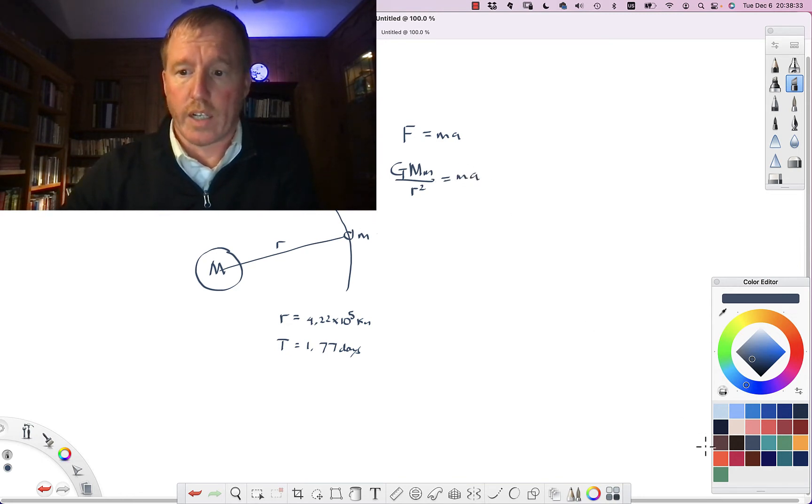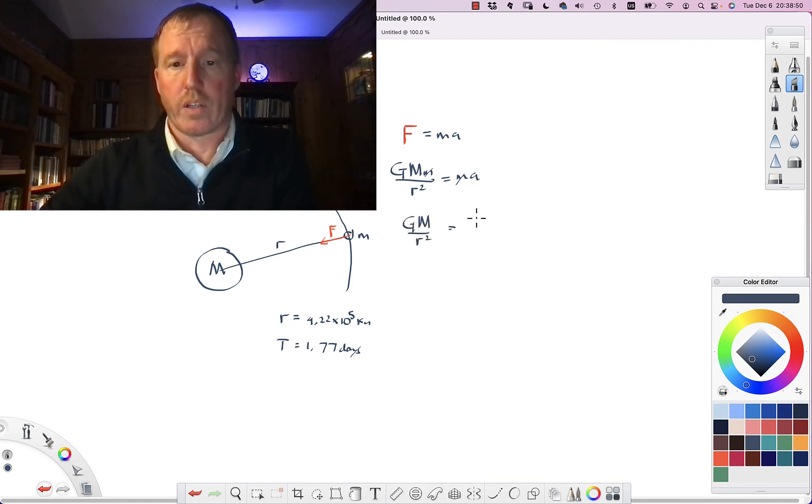So this is the acceleration. This force right here, what we're computing, is the centripetal force that's holding it in, which is the universal law of gravitation. Notice that the little m's cancel out, and so I have G times M over r squared, and that is equal to the acceleration. We know if it's moving in an approximately circular orbit, it's v squared over r.